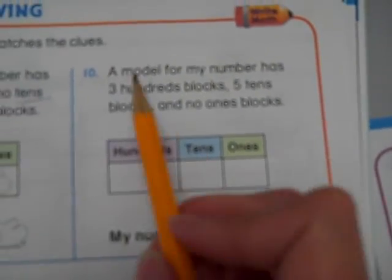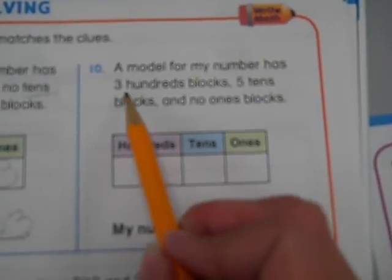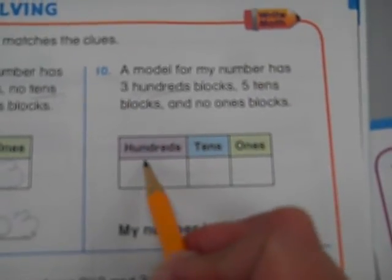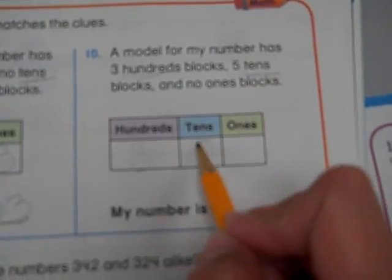Now let's look at this one, number 10. A model for my number has three hundreds blocks, five tens blocks, and no ones blocks. That means they're 0. My number is going to be 350.